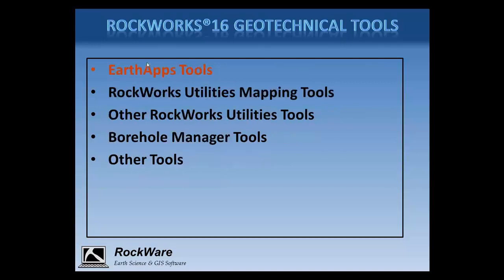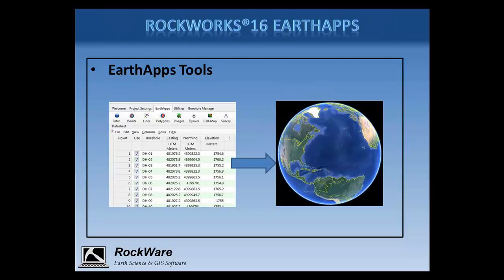The Rockworks 16 Earth Apps programs are available in the Earth Apps program tab. All of the Earth Apps programs are available free of charge. Just install the Rockworks 16 trial version, which is fully functional with all of the programs for two weeks. Once the trial period expires for the rest of the program, the Earth Apps are still available. The Earth Apps are used to read spatial data from the Rockworks data sheet and output maps, images, and flyovers directly to Google Earth.